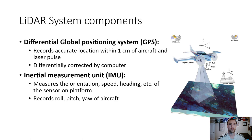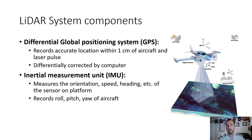Another component is a differential GPS — Global Positioning System — that records accurate location within one centimeter of the aircraft and laser pulse, then differentially corrects with a computer to account for movement of the aircraft. The third component is the IMU, or Inertial Measurement Unit, which measures the orientation, speed, and heading of the sensor on the platform — recording pitch, roll, yaw, and so on from the airplane.